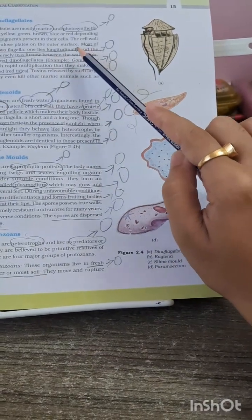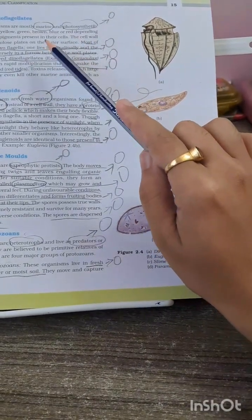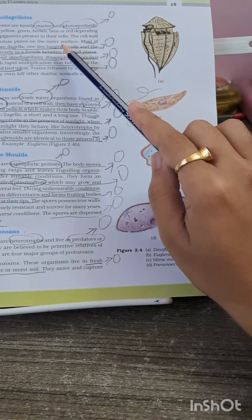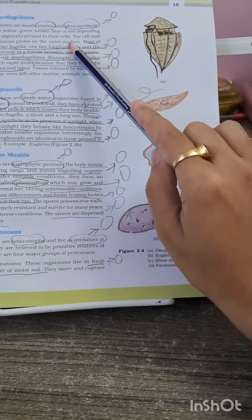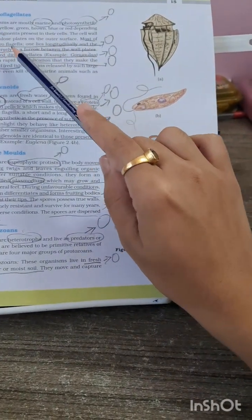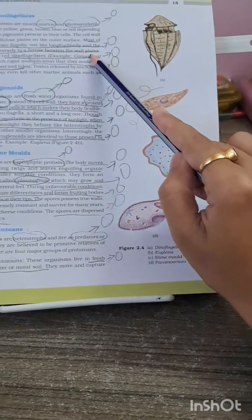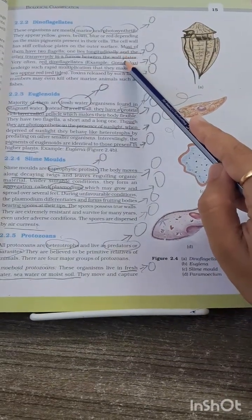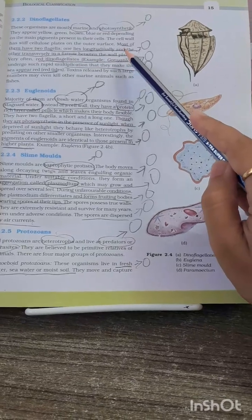From each word of this sentence can be an MCQ, like one lies longitudinal, other lies transversely in a furrow in between the wall plates. So you have to be very clear about this sentence.